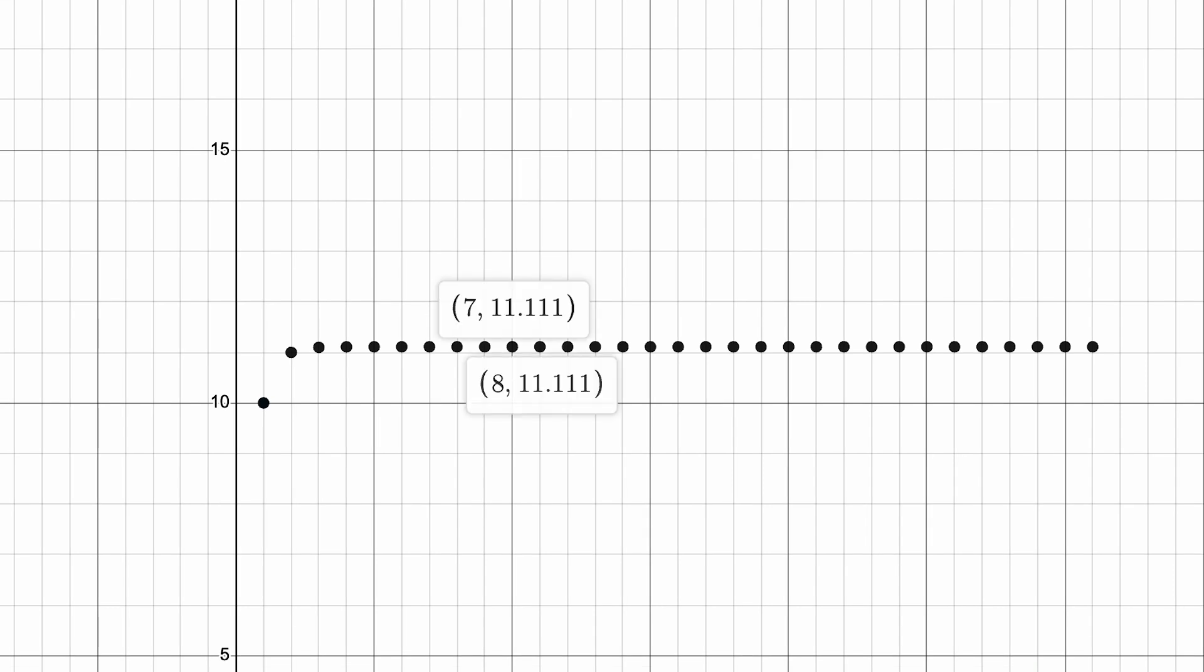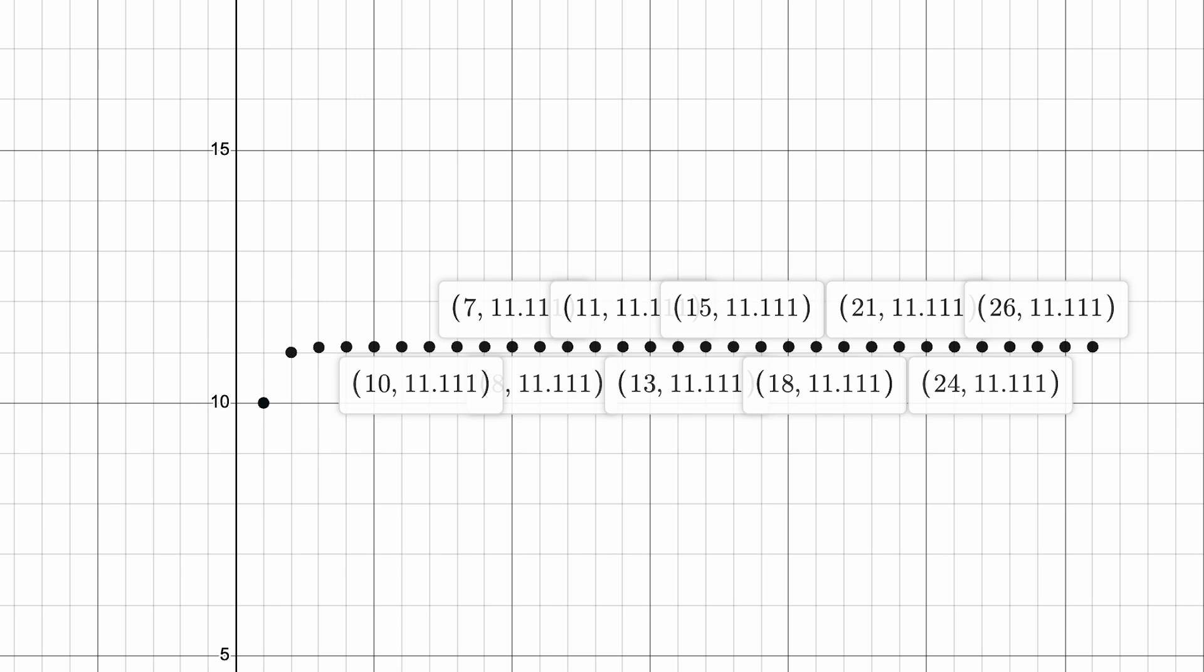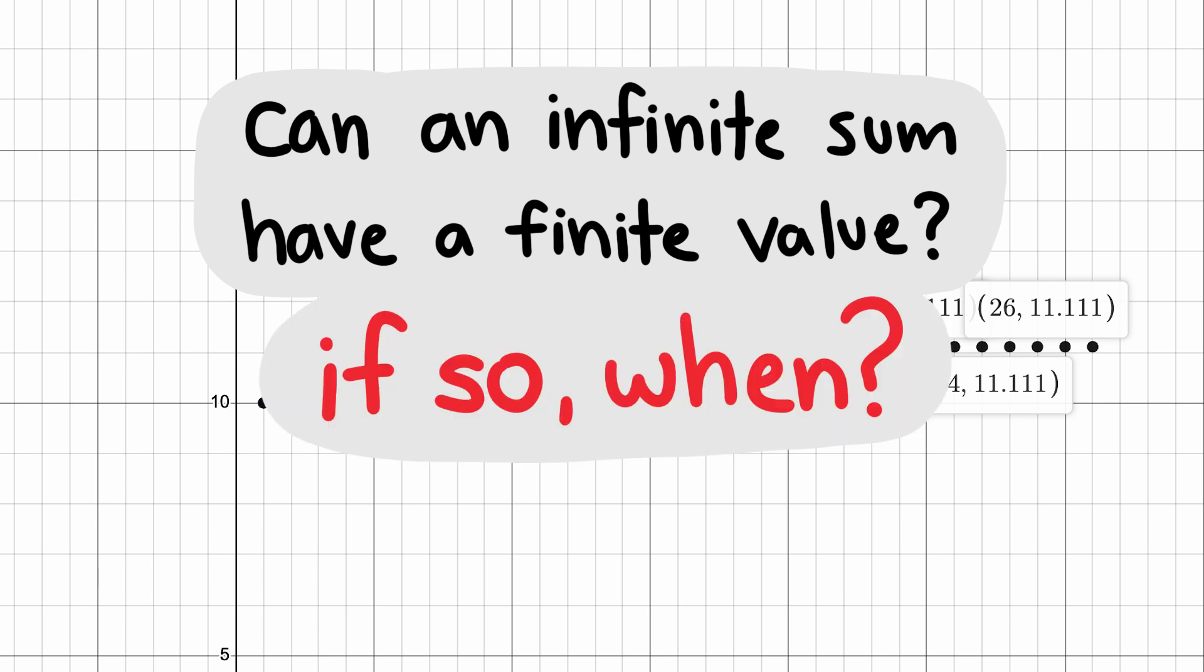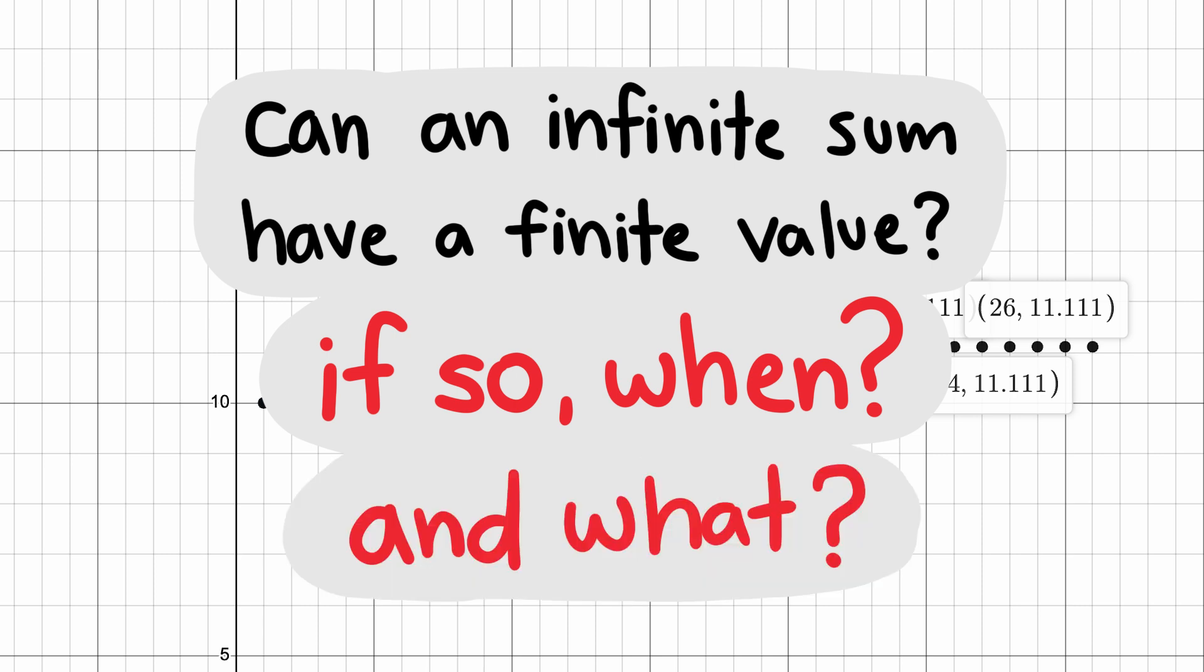Creeping up to a number needs to be flushed out a little, but it is the intuitive idea of convergence. Can a sum of infinitely many values, that is an infinite series, have a finite value? If so, when does it have a finite value? And if it does have a finite value, what is that value?